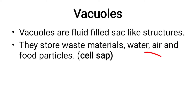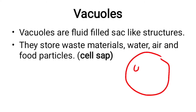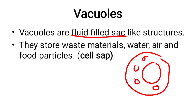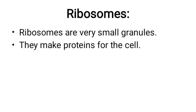Vacuoles are sac-like structures inside the cell, similar to empty bags filled with water or fluid. Their function is to store waste materials and extra substances in the cell — for example, air, water, food particles, salt, and sugar. In MCQs, vacuoles are referred to as the storage area of the cell.